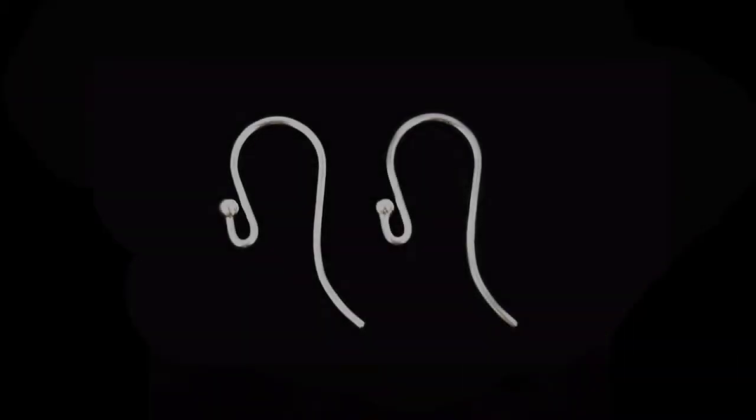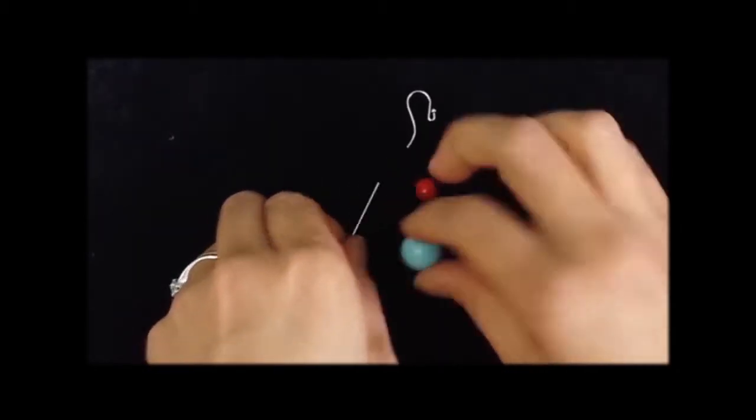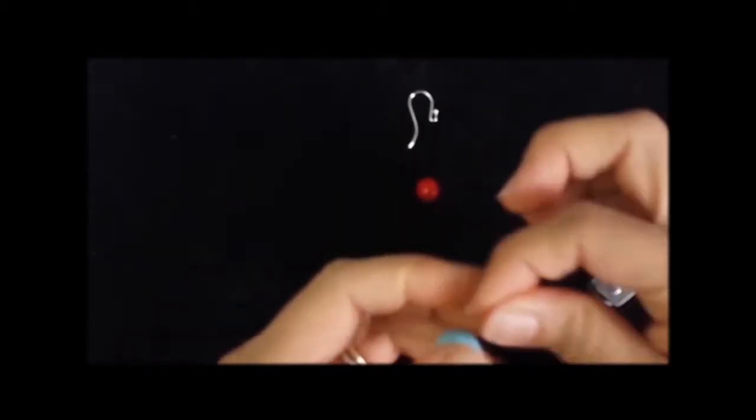How to make earrings using a pair of shepherd hooks, ball headed pins, and beads. Ensure you have round nose and flat pliers at reach.